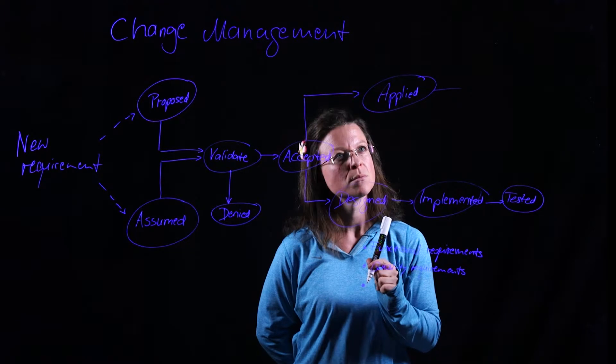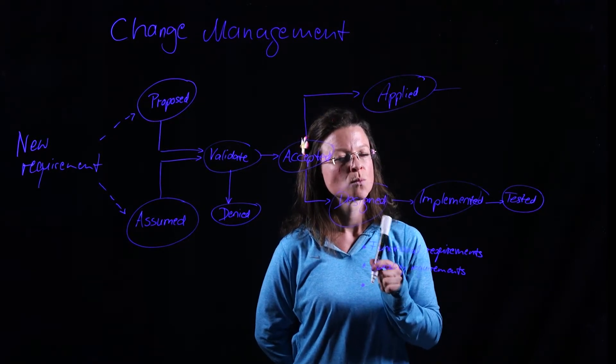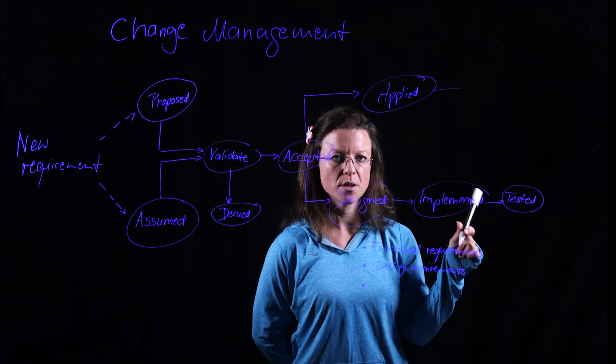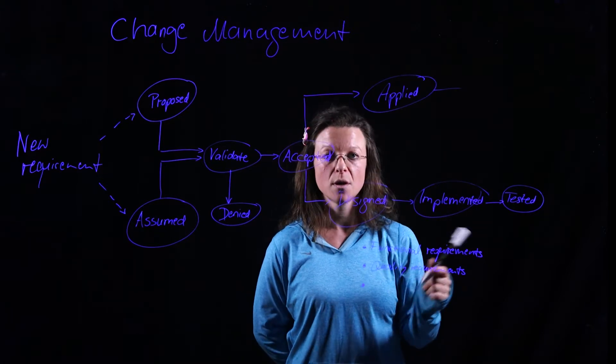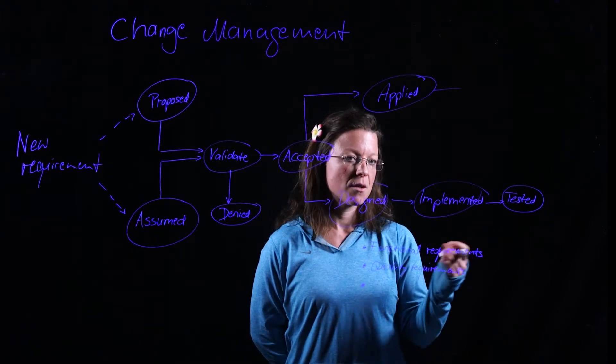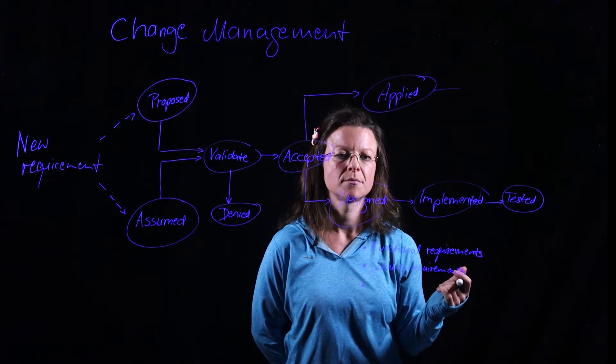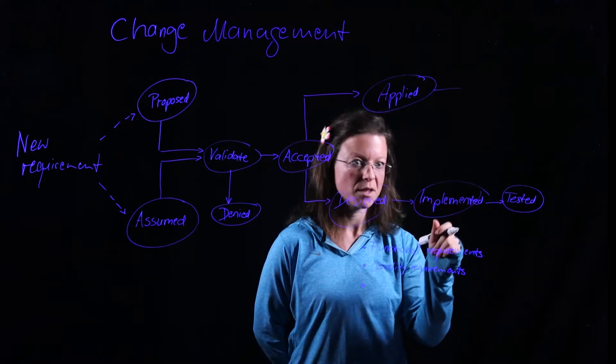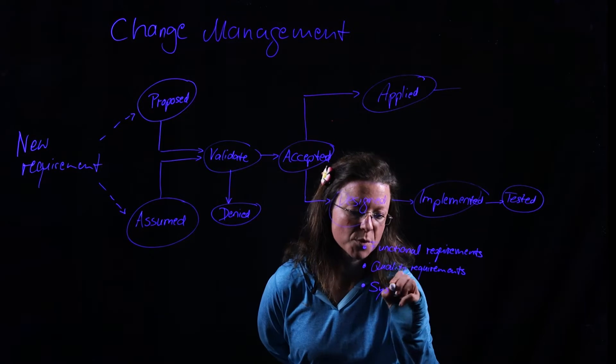And what about system constraints? If it says the system that we're talking to is using version 3.2.2 of a specific language that we talk in with that system, then we need to design for that, we need to implement according to that, and we need to test it. So system constraints go down here, the lower route too.